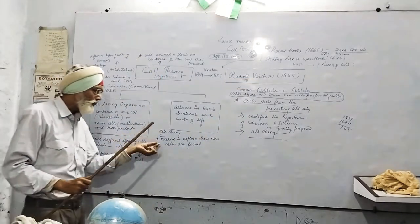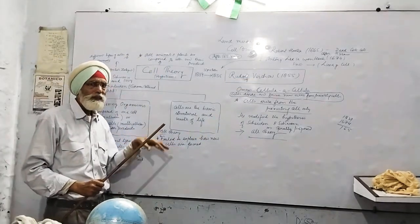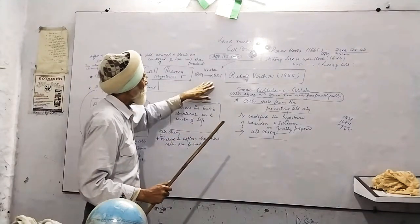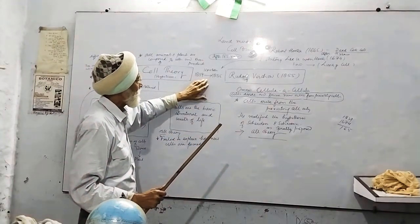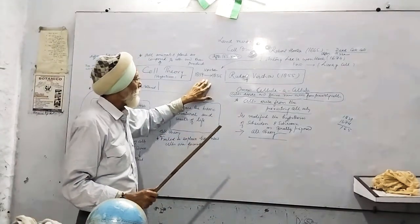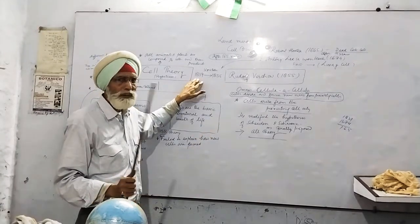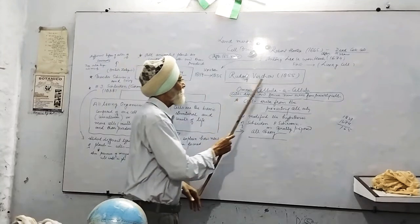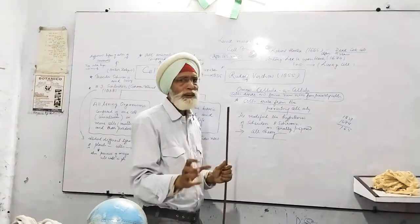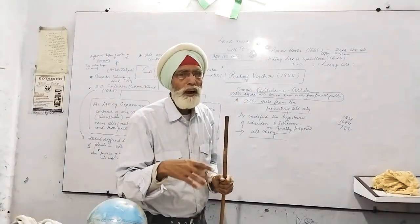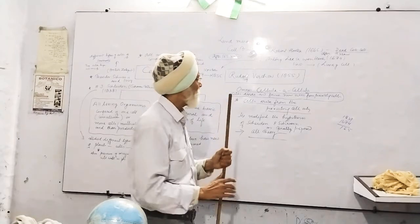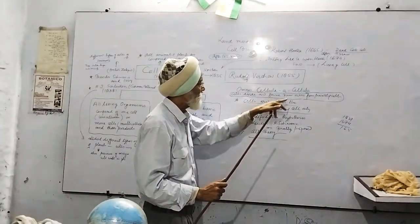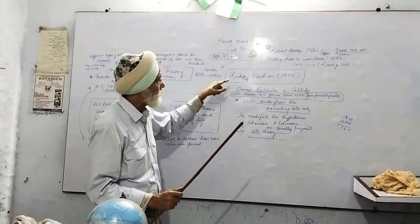As I told you, that they did not know how the cells are formed. And to answer this, it took 16 years. In 1839, cell theory was proposed, and after 16 years, it was Rudolf Virchow, who for the first time explained how the cells are, or how the new cells are formed. Omnis cellularis e cellularis. This dictum was given by Rudolf Virchow.